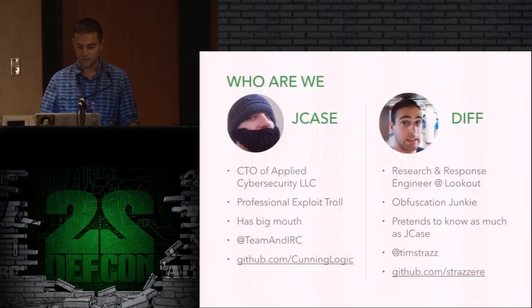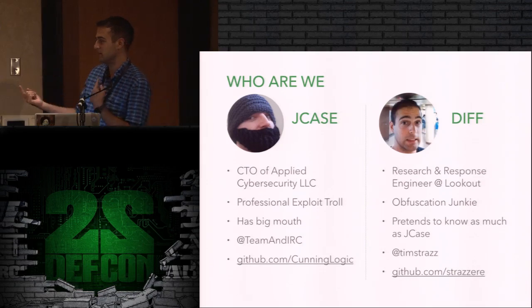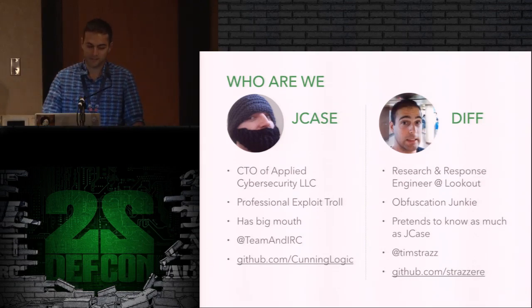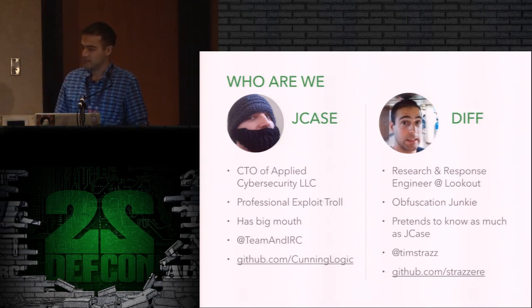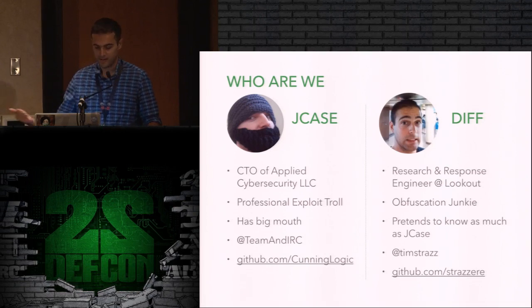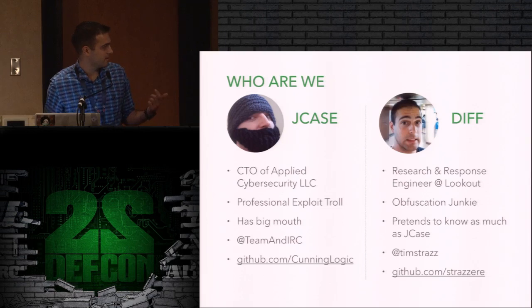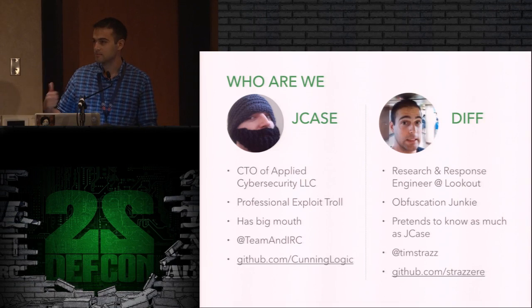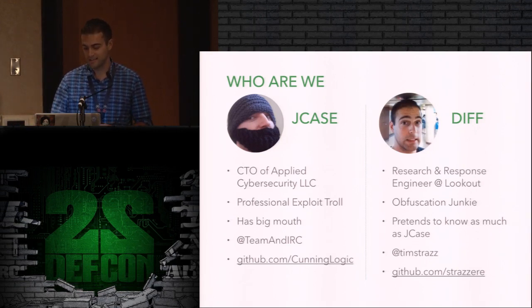So just a quick who are we? This guy is Jay Case. This is proof that we are not the same person. Many people have thought that for a couple of years that we're the same exact person. So he's CTO, Applied Cyber Security — basically an expert troll who finds lots of stuff and has the biggest mouth in Android. That's his GitHub, that's his Twitter. I think he just capped out and beat Dan Rosenberg, so keep following him. I'm an obfuscation junkie. I work at Lookout Mobile Security. I do research and response and I pretend to know as much as this guy — and that's also my GitHub.